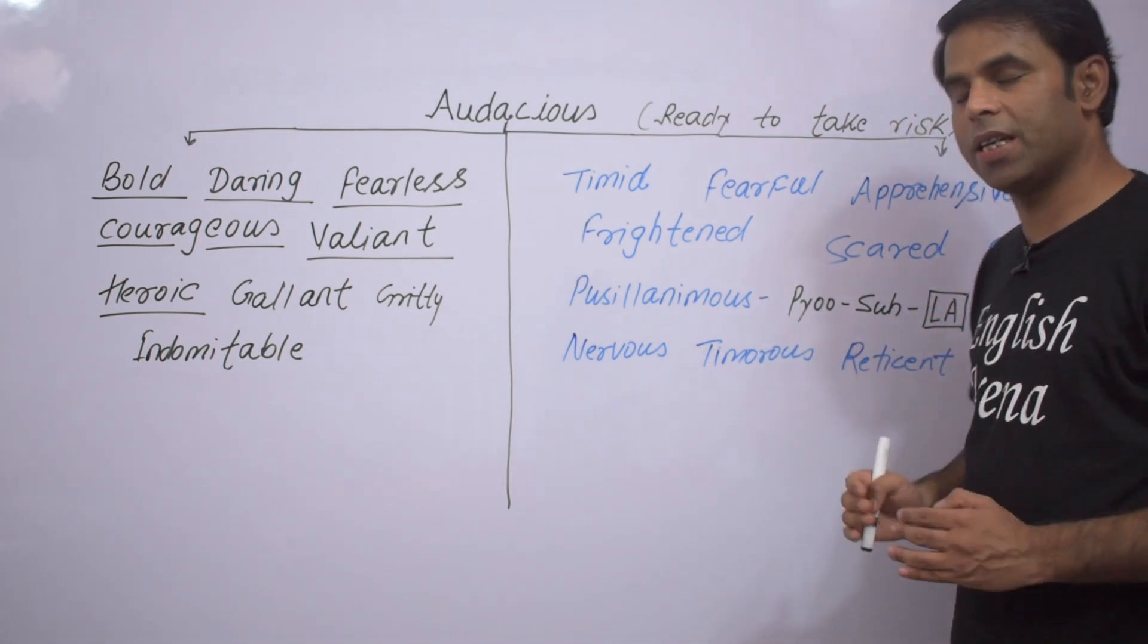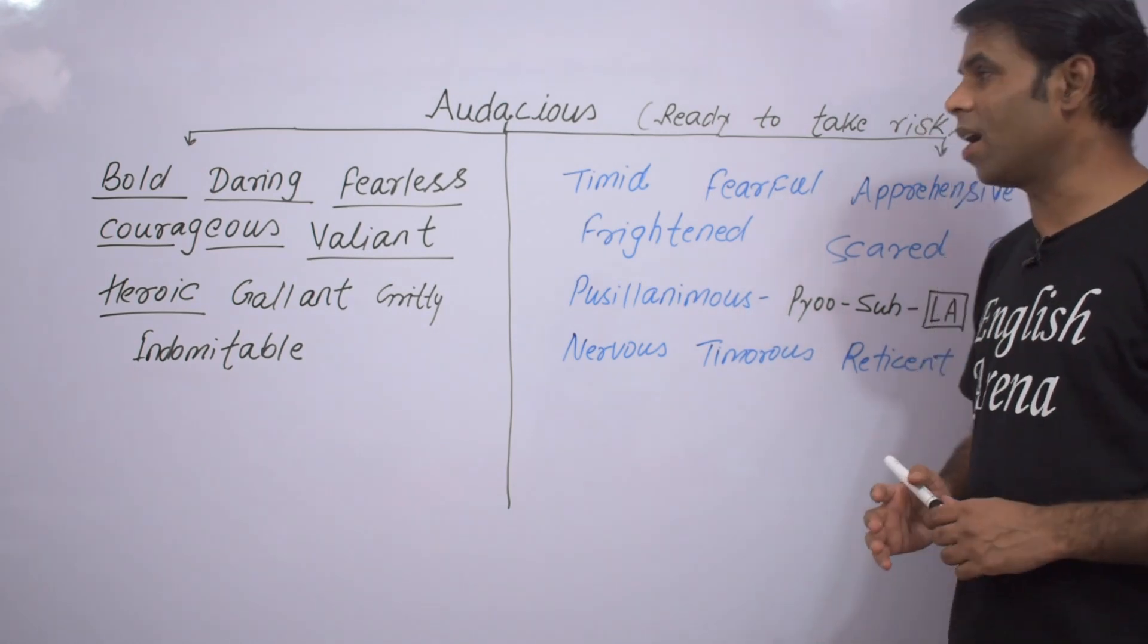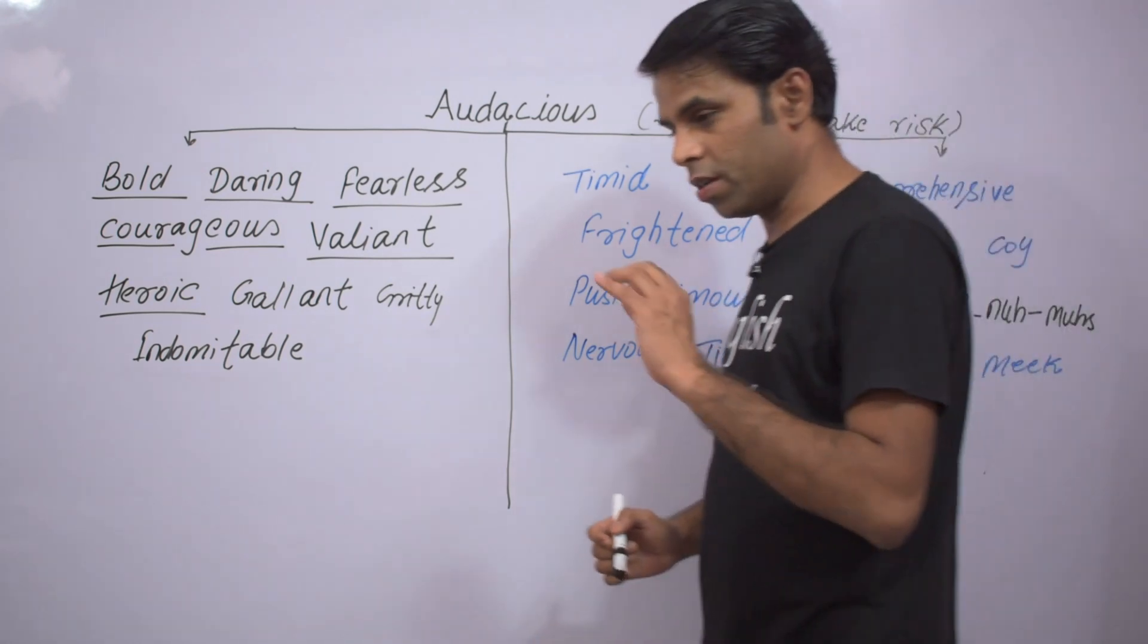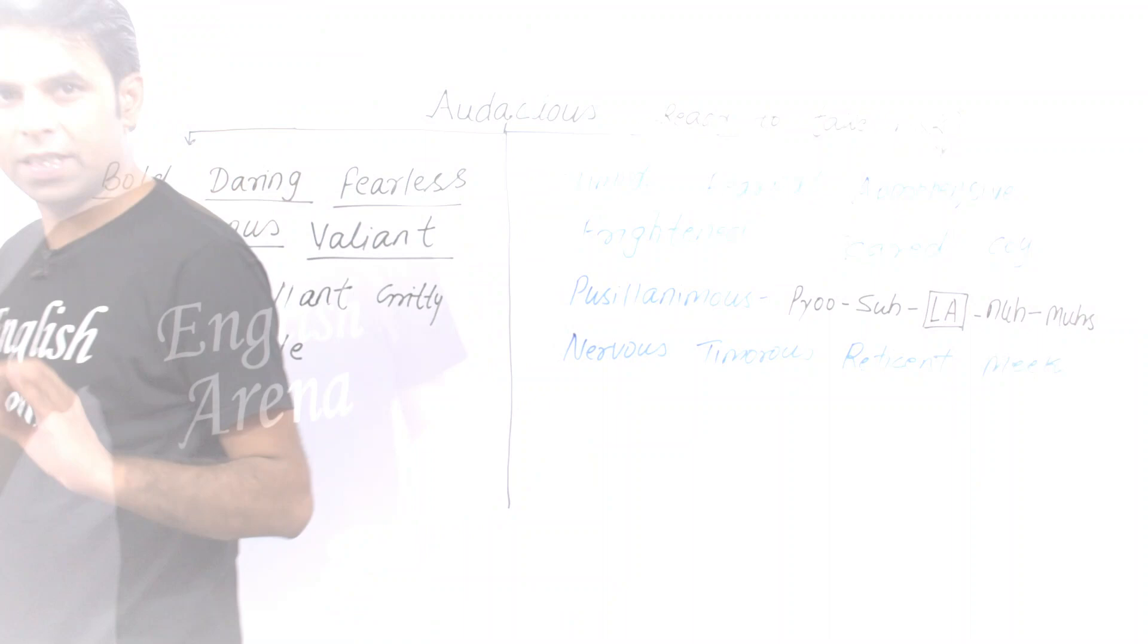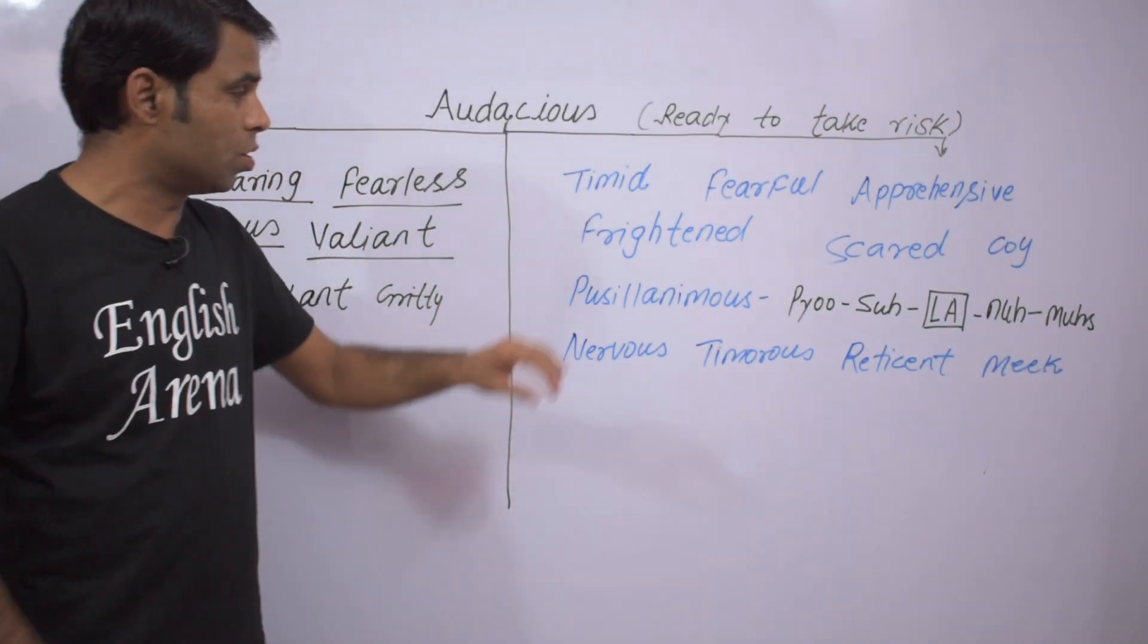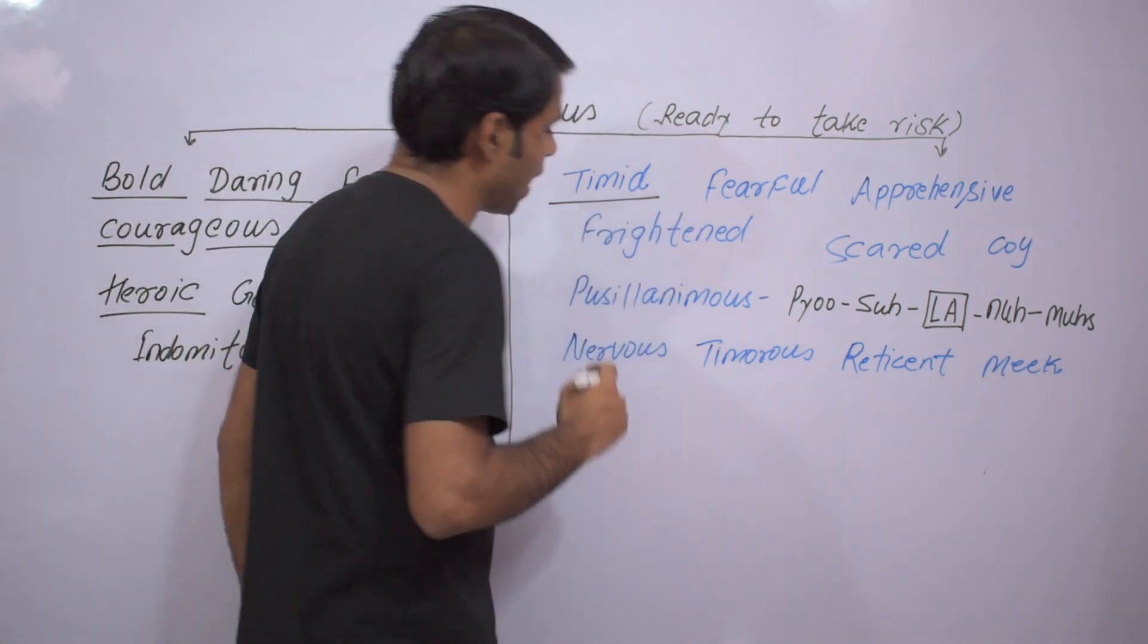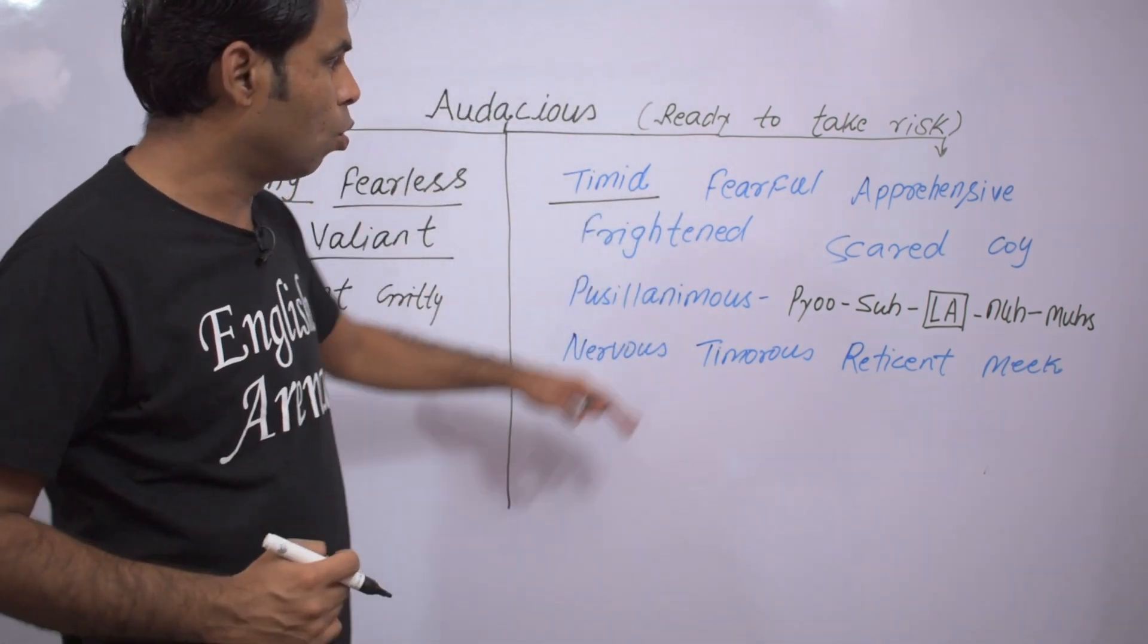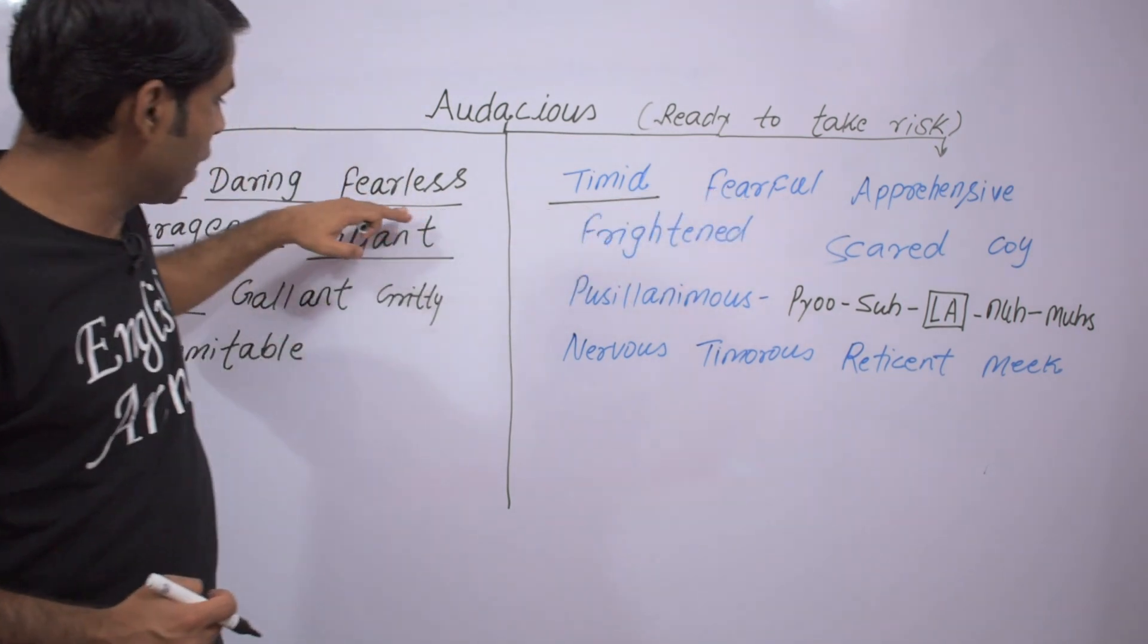Now let's talk about antonyms, the opposite words. The first word is timid, t-i-m-i-d, timid, or fearful. So here we have fearless, here we have fearful.